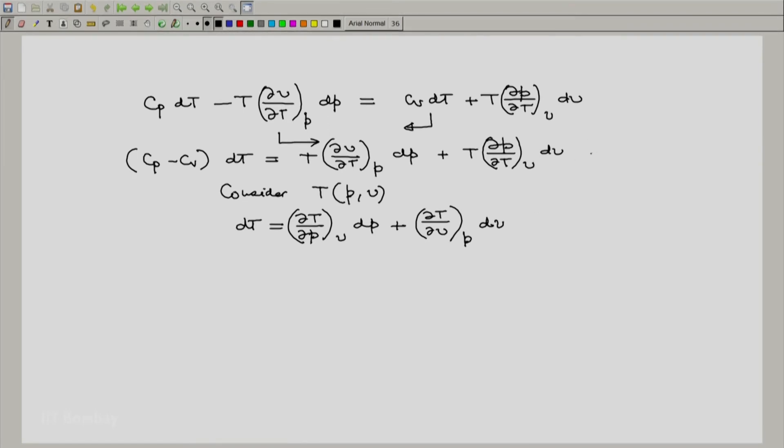Now substitute this dT from equation 2 in the left hand side of equation 1 and you will get an expression containing dP and dV. But since P and V are the independent variables we have chosen, the coefficient of dP should be 0, the coefficient of dV should be 0. The best way to do this is put all the coefficients of dP together on the left hand side, all the coefficients of dV together on the right hand side. And then the coefficients have to be 0 because dT and dV are differentials of two independent variables P and V.